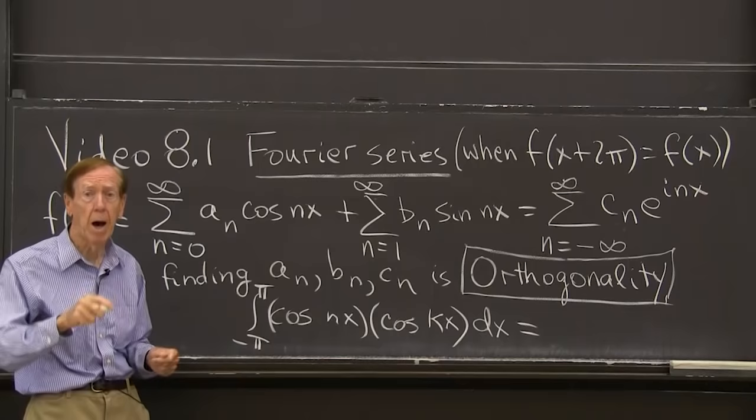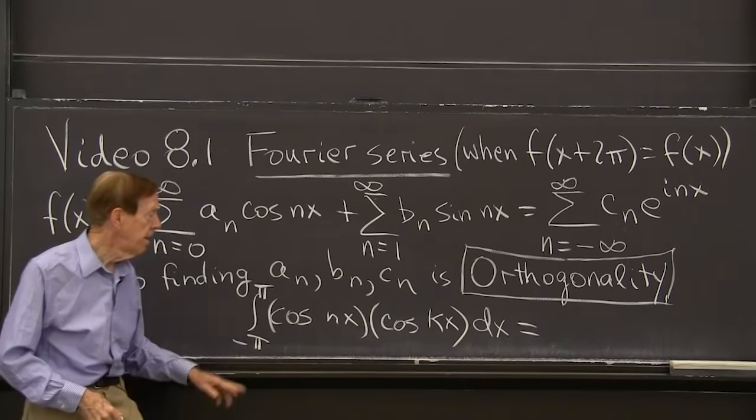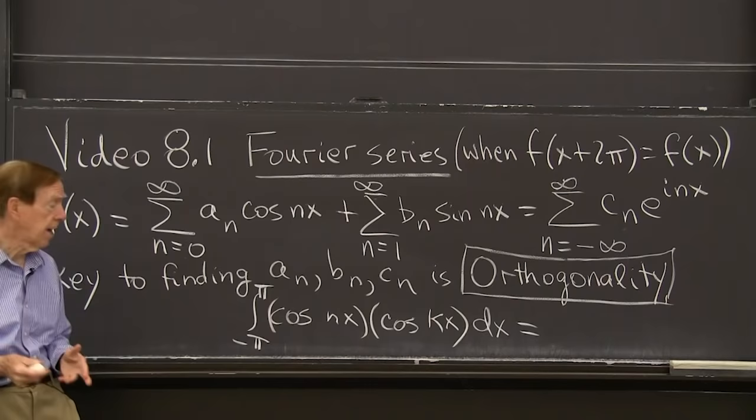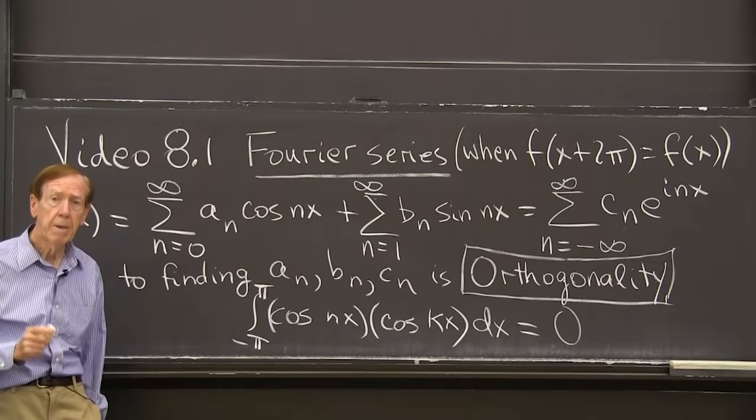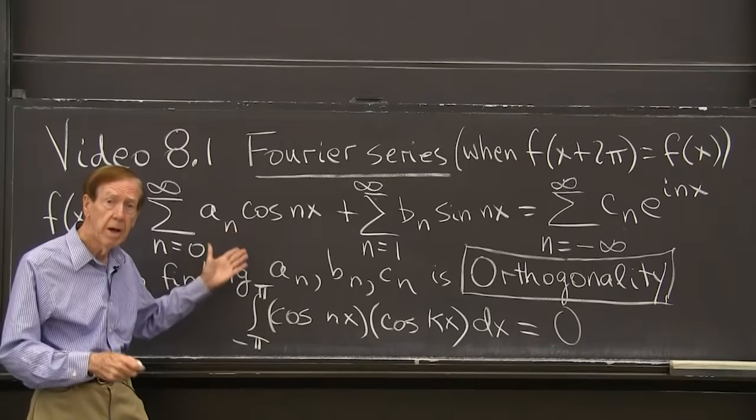But now, so what's the answer to this integral? Cosine of 7x times cosine of 12x dx over the range minus pi to pi. The answer is, orthogonality comes in, the answer is 0. That's the crucial fact. That's what makes it possible to separate out a_7 and a_12 and get hold of them.